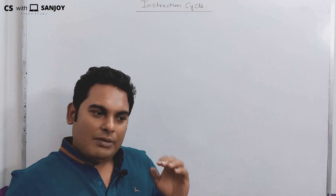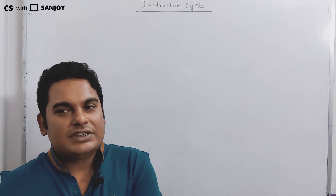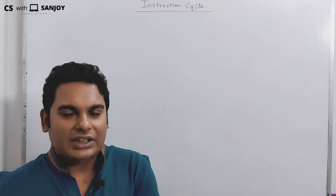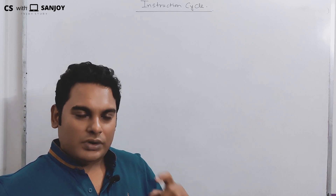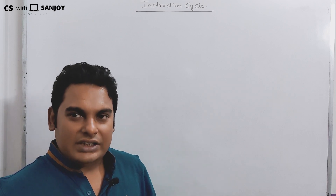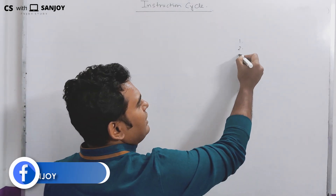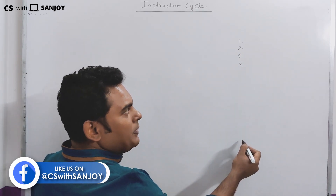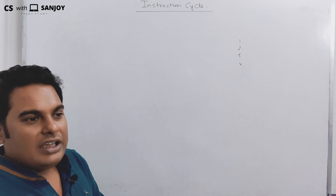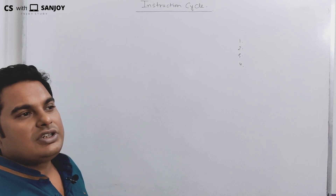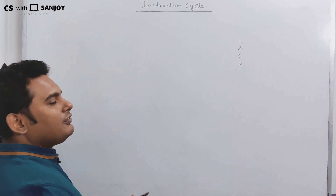An instruction execution happens through multiple sub-phases. These phases repeat after the instruction is executed, and they repeat again and again along with the program. That's why it is called a cycle.